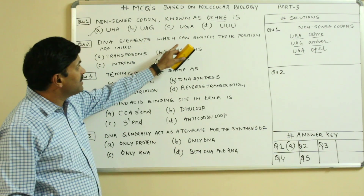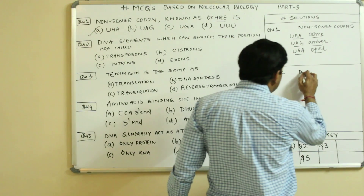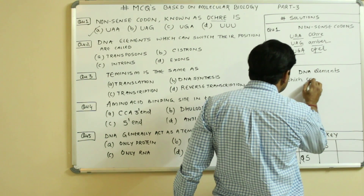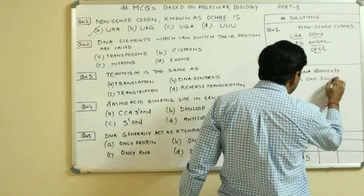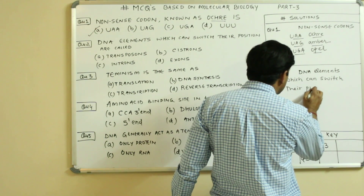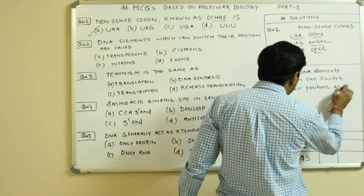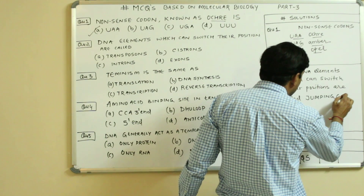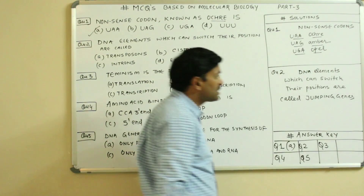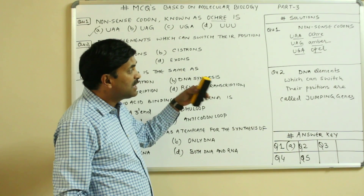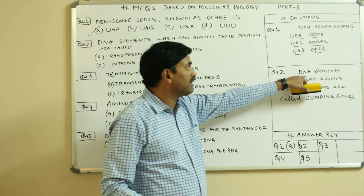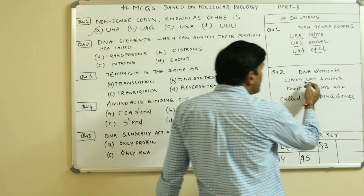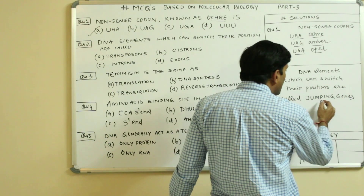DNA elements which can switch their positions are called jumping genes. Genes are nothing but short segments of DNA. So DNA elements which can change or switch their position are called jumping genes.